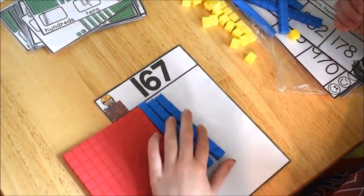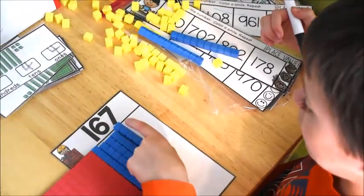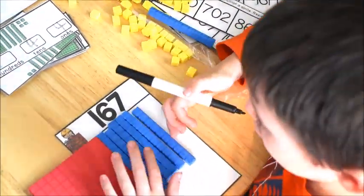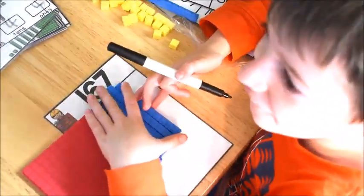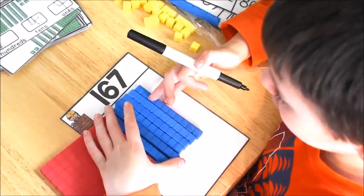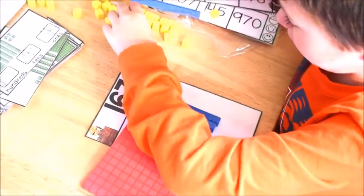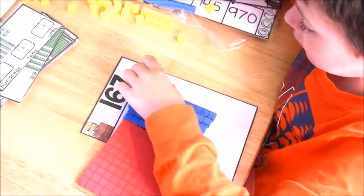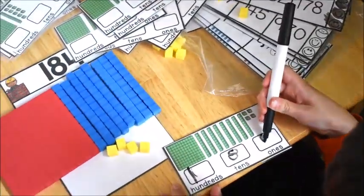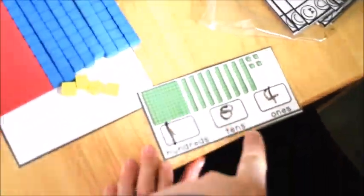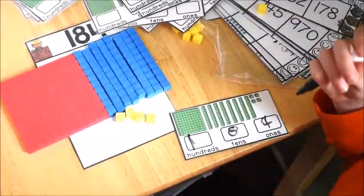This is a place value activity, and we used place value blocks. You can get them fairly cheap. I think mine were only less than $10. He would look at the number, and he had to build the number with place value blocks. And then he had to find the card that matched and write the number out.